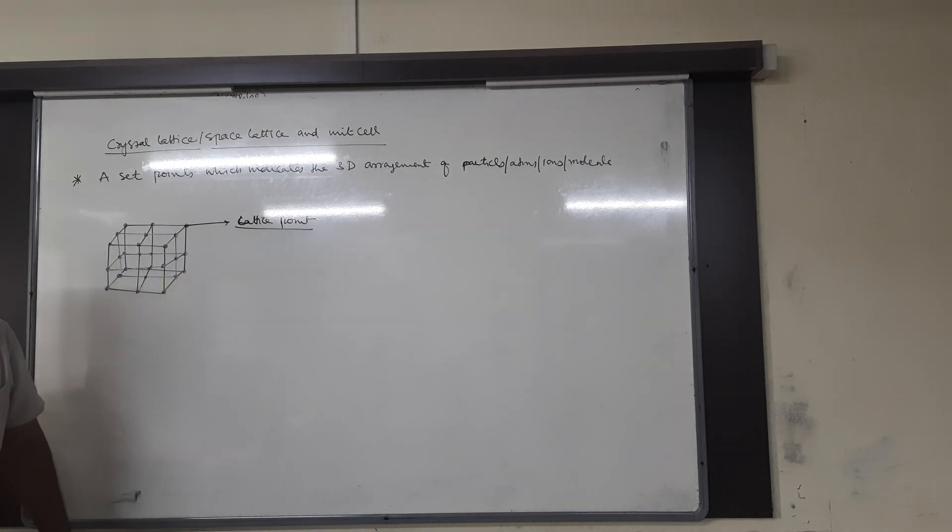Crystal lattice or space lattice: a set of points which indicates the three-dimensional arrangement of particles — atoms, ions, or molecules — is called crystal lattice or space lattice.